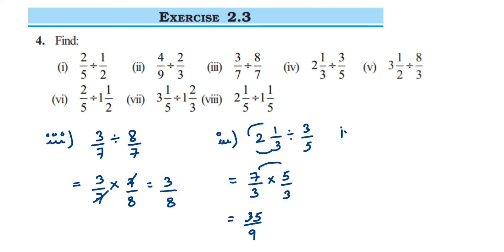Fifth question: we have a mixed fraction again — 3 and 1 by 2 divided by 8 by 3. First, convert the mixed fraction to an improper fraction: 3 twos are 6, and we add the numerator — 6 plus 1 is 7 — so we get 7 by 2.